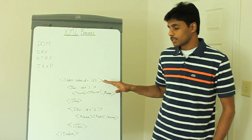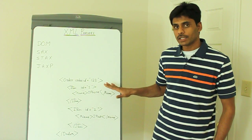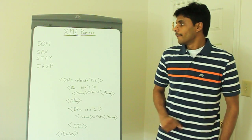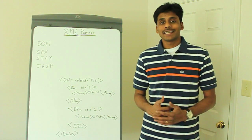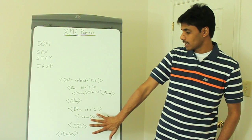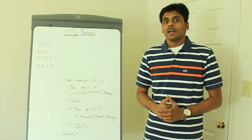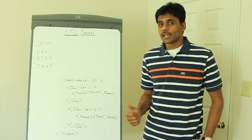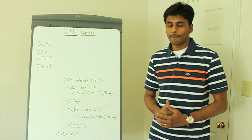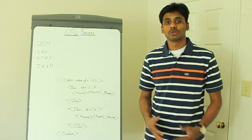Once this document is loaded using a DOM parser, the DOM APIs will allow us to access the order element first, and then we can invoke the methods on the DOM API and access its child elements. DOM is advantageous to use when you have to access widely spread XML elements within an XML document. So if you want to access item 1 and item 2 at the same time, you should use a DOM parser. You can both read and write documents, and also access multiple XML documents at the same time. An obvious disadvantage is that DOM loads the entire XML document into memory, so it has a huge memory footprint.